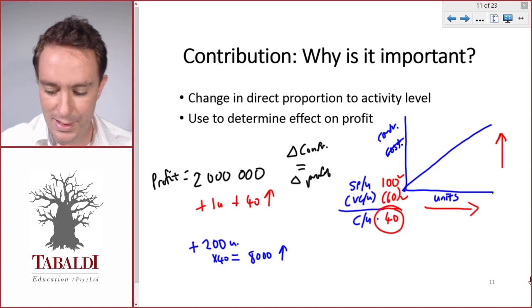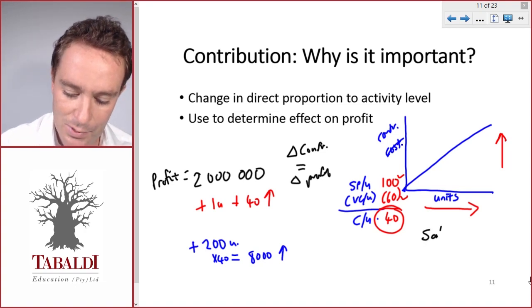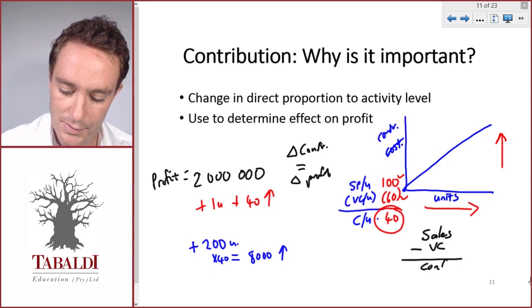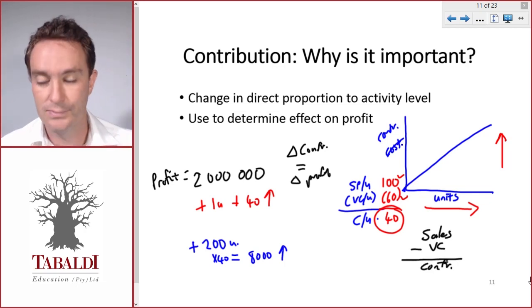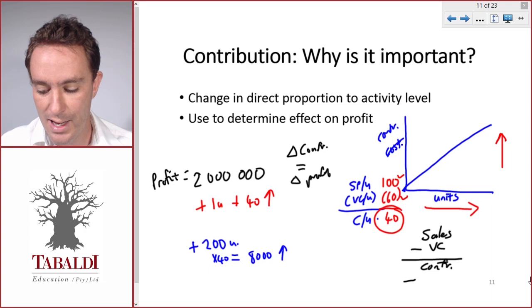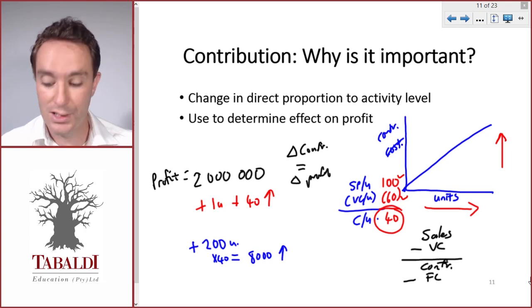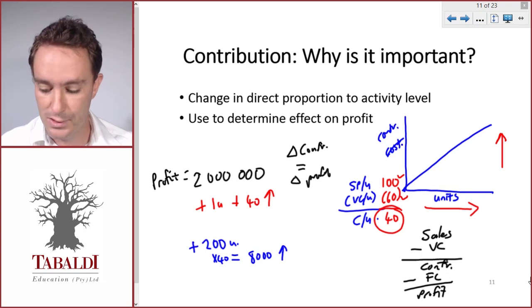To illustrate why this is, if you think of the income statement: sales less variable costs gives us contribution, and the only thing we still need to deduct to get to profit are our fixed costs.